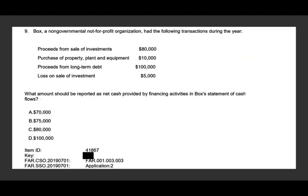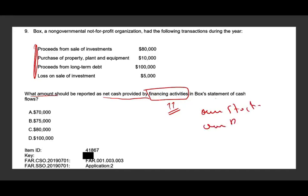Number nine: when there are a lot of numbers, read the question first. What amount should be reported in net cash provided by financing activities in Box's statement of cash flows? We have a list of transactions and they want us to know which one is financing. Before you even look at the choices, you should immediately be thinking: own stocks, own debt. Proceeds from the sale of investments — that has nothing to do with your own stocks or your own debt, so that's out.